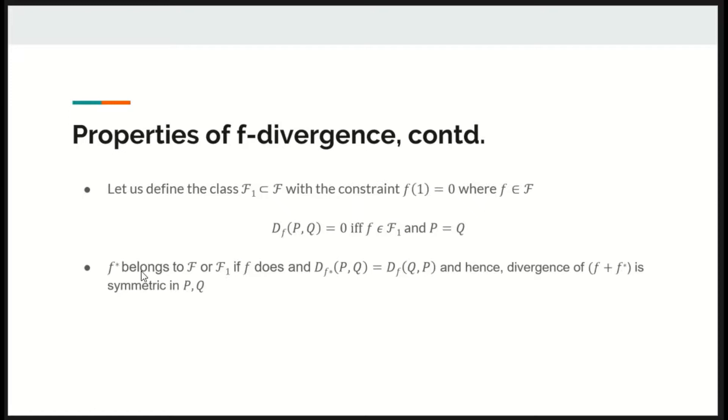F-star belongs to class F or F1 only if F does and F-star divergence between P and Q is equal to F-divergence between Q and P. And hence divergence of F plus F-star is symmetric in P and Q.